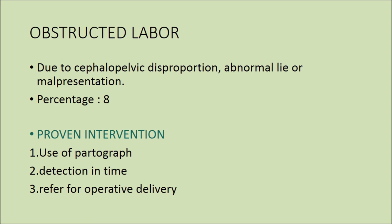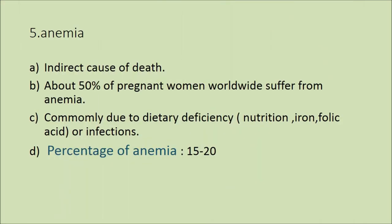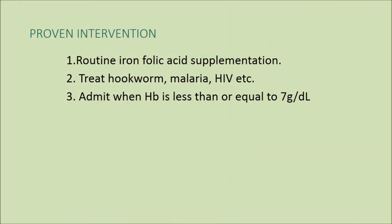Early detection and timely referral to operative delivery are important interventions. Anemia is an indirect cause of death; about 50 percent of pregnant women worldwide suffer from anemia, commonly due to dietary deficiency, nutrition, iron, folic acid, and infections. The percentage of anemia cases is 15 to 20 percent. Proven interventions include routine iron and folic acid supplementation, treating hookworm and malaria, HIV infections, and admitting when hemoglobin is less than or equal to 7 grams per deciliter.